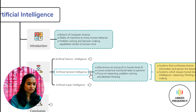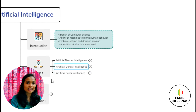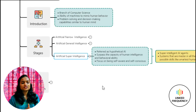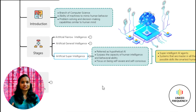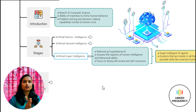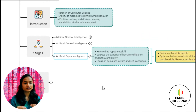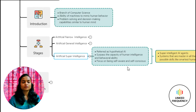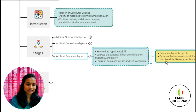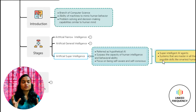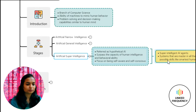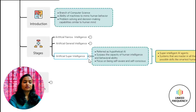Now let's move on to Artificial Super Intelligence, or ASI. Artificial Super Intelligence is referred to as hypothetical AI because it surpasses all human intelligence — way beyond what humans can perform. It majorly focuses on being self-aware and self-conscious to perform an activity. Examples of ASI include a super intelligent AI agent capable of mimicking each and every aspect of human behavior and beyond, with systems that have mastered every skill.